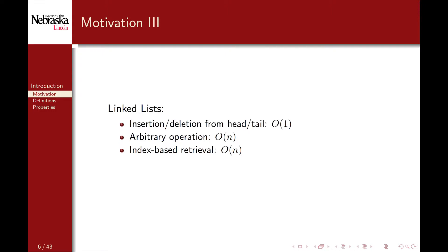Linked lists solved this problem by allowing us to efficiently insert elements at either end of the list, either the head or the tail. However, it came at a cost. Index-based retrieval was no longer a constant operation, as we had to traverse the list to the element that we were searching for. Likewise, arbitrary insertion or deletion were also linear, because they involved searching for the element to begin with.